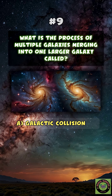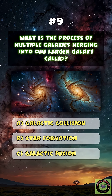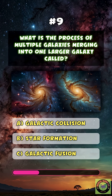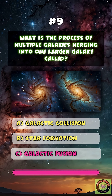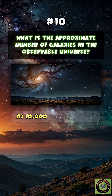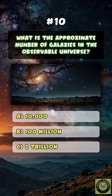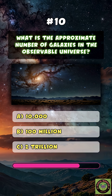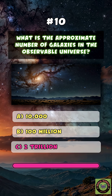What is the process of multiple galaxies merging into one larger galaxy called? C. Galactic fusion. What is the approximate number of galaxies in the observable universe? C. Two trillion.